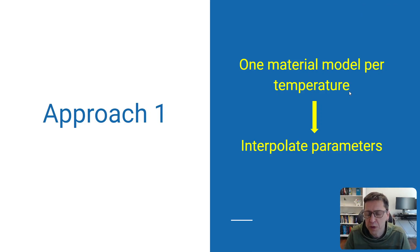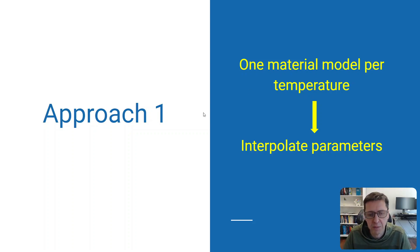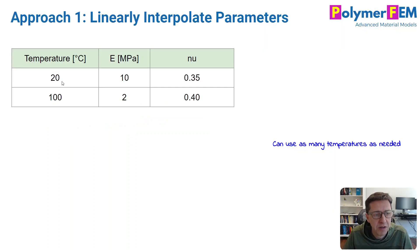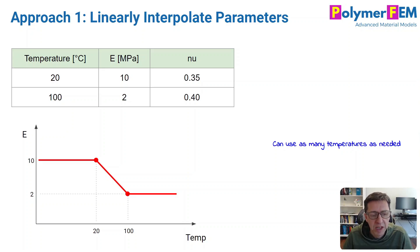I'll start with method one, where you basically calibrate a material model for each temperature that you're interested in, and then you somehow interpolate these sets of parameters between the different temperatures. As an example, here is some data for a material — Young's modulus and Poisson's ratio at two different temperatures. If you plot the data, you have two data points, and you can simply assume a linear dependence between these points, with the properties staying the same outside the range of available data.